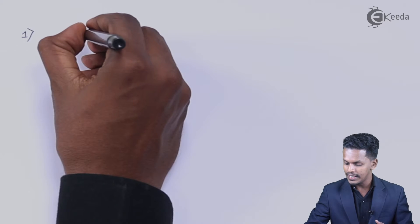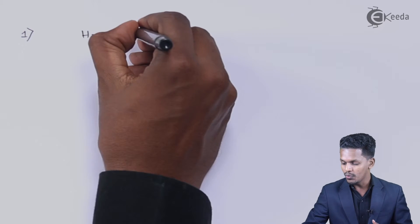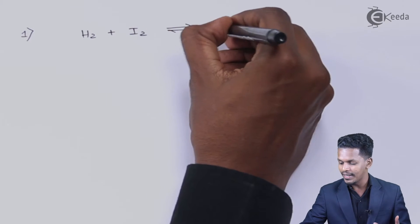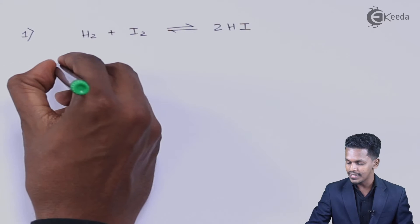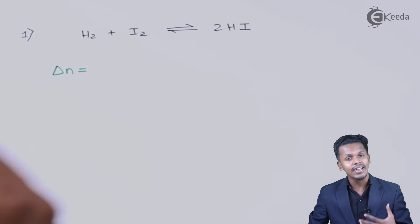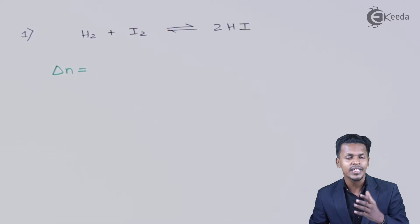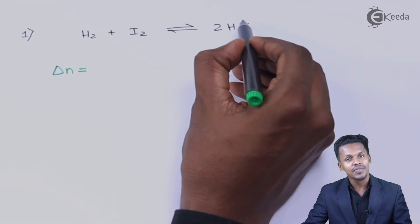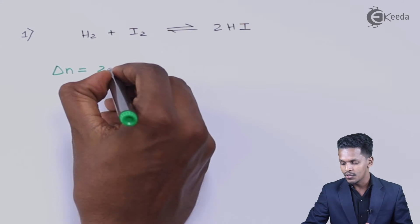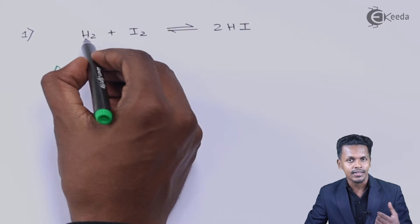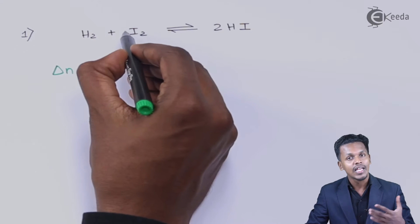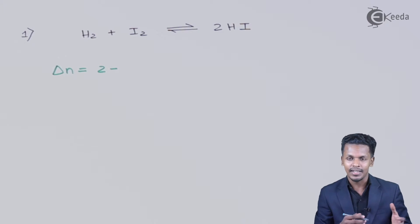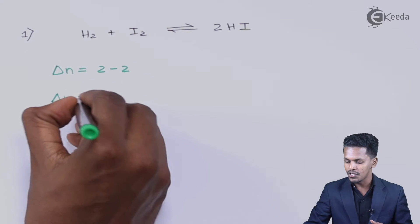The first reaction: H₂ combined with I₂ in a reversible reaction gives two moles of HI. In this case, the value of delta n is: the number of moles of the gaseous product is two moles, minus the total number of moles of the reactants. Here it is one mole of H₂ plus one mole of I₂, making two moles of the reactant mixture. So two minus two gives delta n equal to zero.